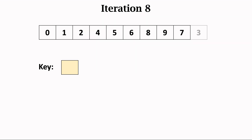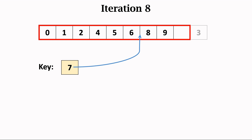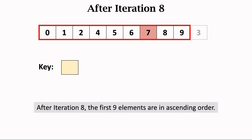Then the eighth iteration. We work on the first nine elements. Take the rightmost element, 7, out of the subarray and let 7 be the key. By comparing the key with the remaining elements, we find the position for inserting the key. Move the elements bigger than the key one step rightward. Then insert the key into the vacant position. After the eighth iteration, the first nine elements are in ascending order.